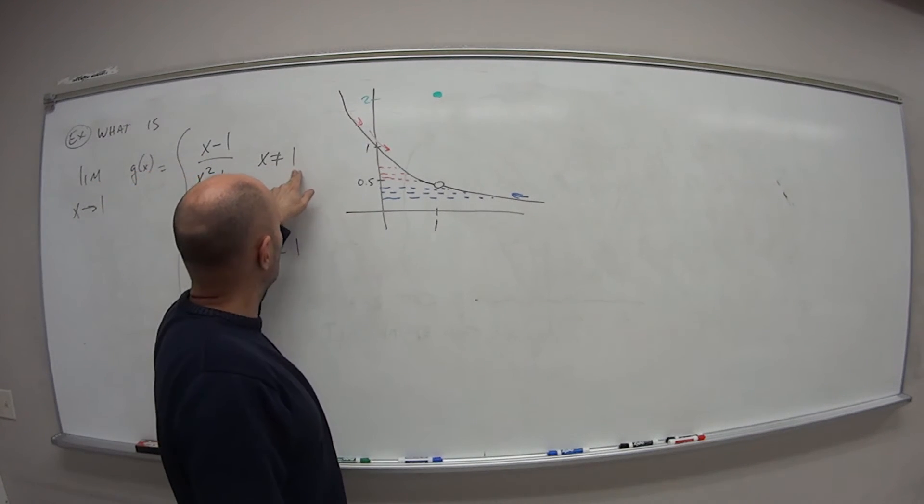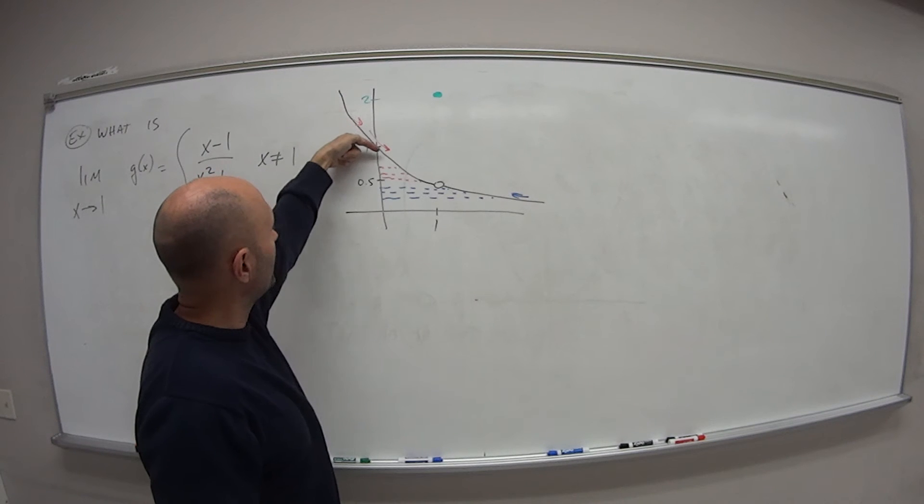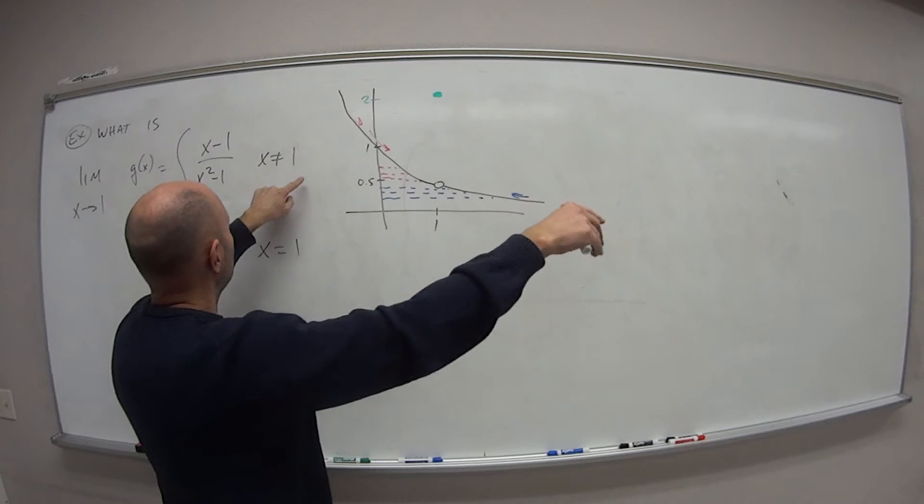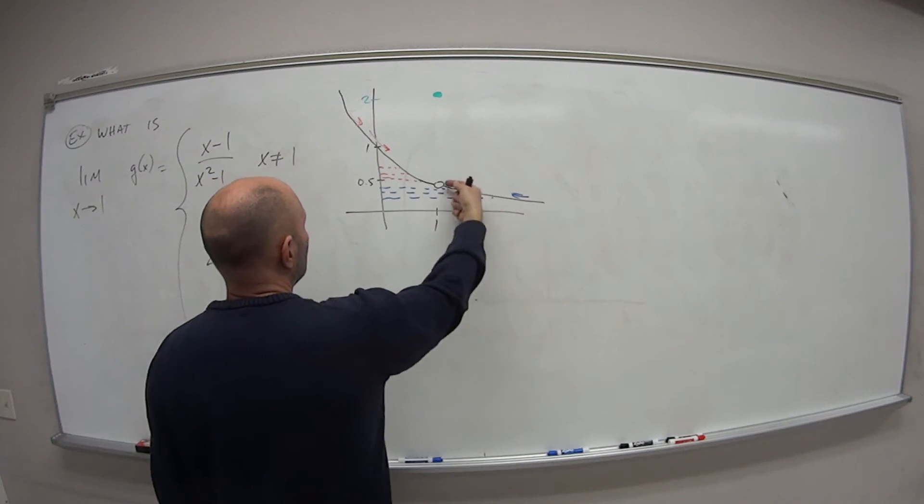when x is not 1 on the left side, what do I get closer and closer to? Half. When x is not 1 from the right side, what do I get closer and closer to? Half.